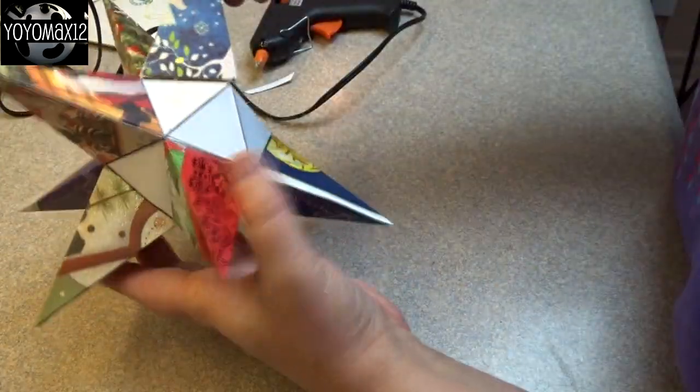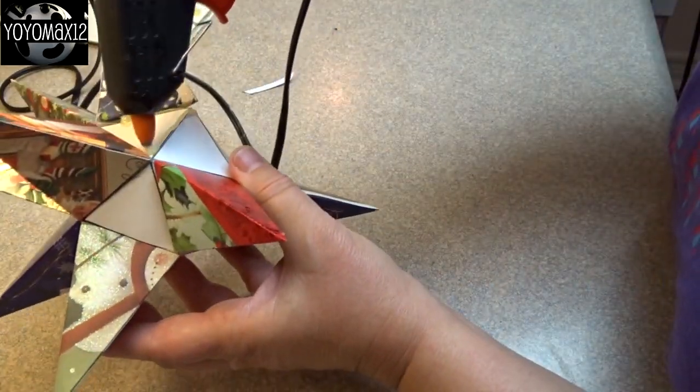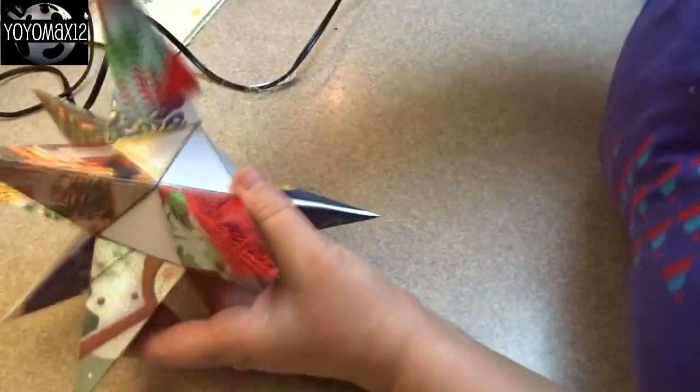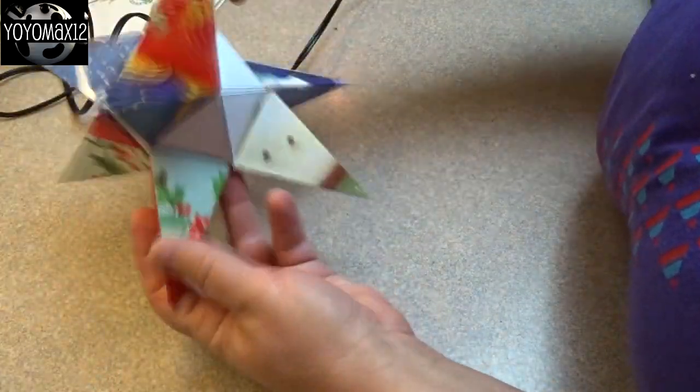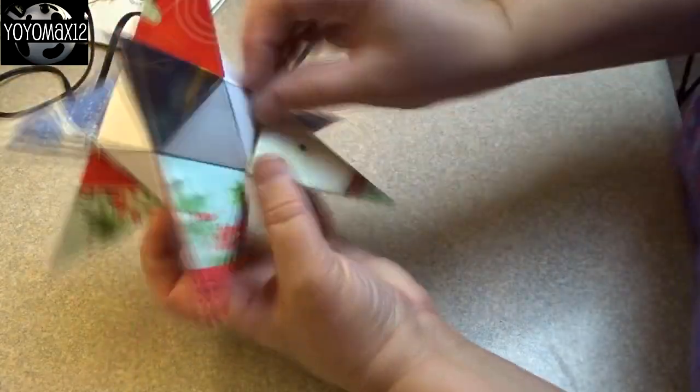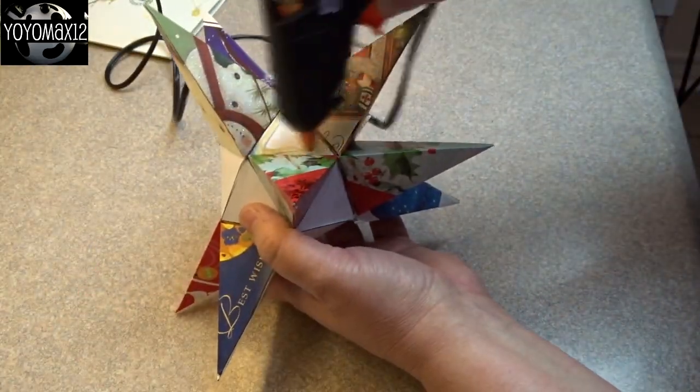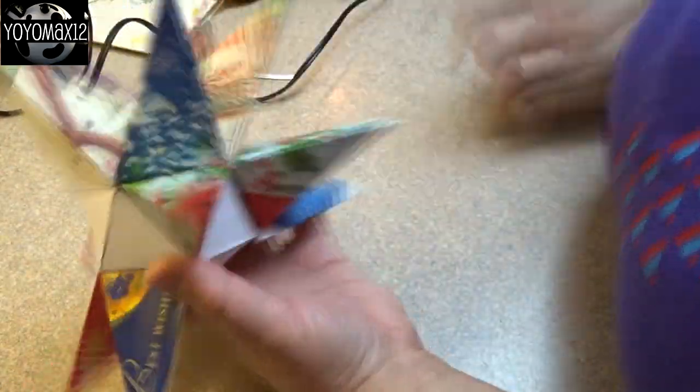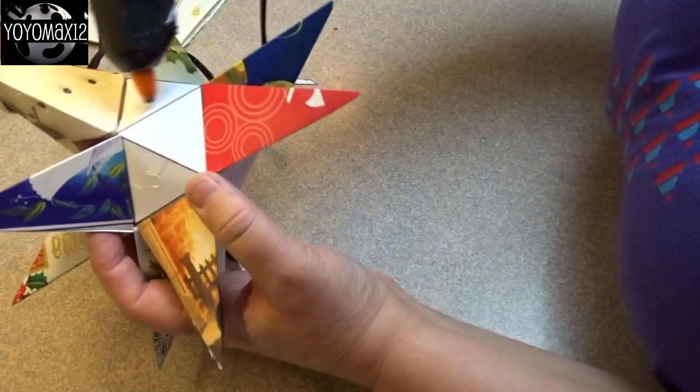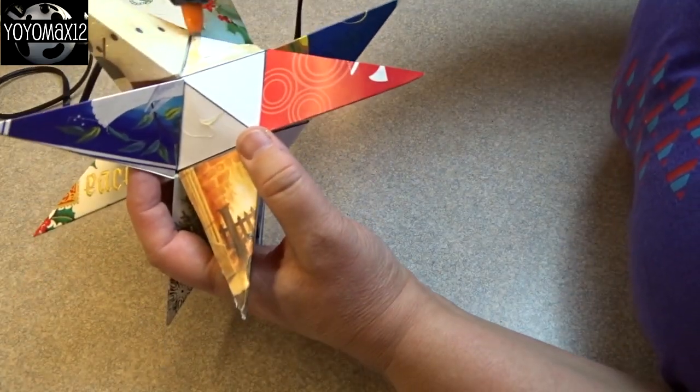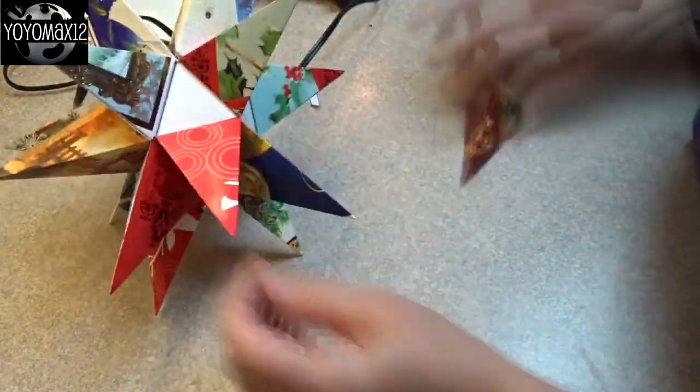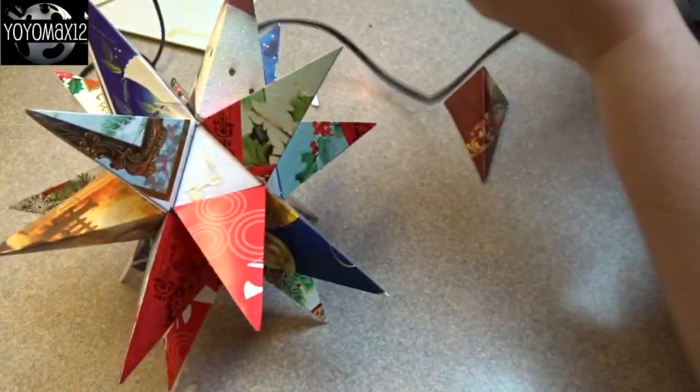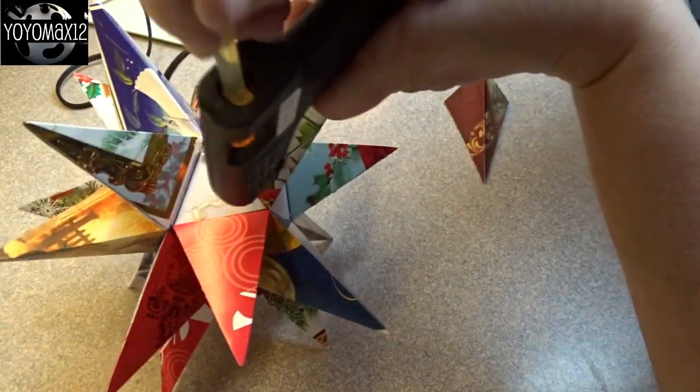Just keep going all the way around until you have all your star points attached. What I tried to do is make sure that I didn't put all the blue ones together and all the red ones together. I tried to mix them up. That's why I keep turning it as I'm adding because I wanted all the colors to be evenly distributed around the entire star. We're getting close to the edge. I figured out at this point that you just need to put the glue on the outside edge. It's a lot of fun watching this come together. And now we're down to the very last point.